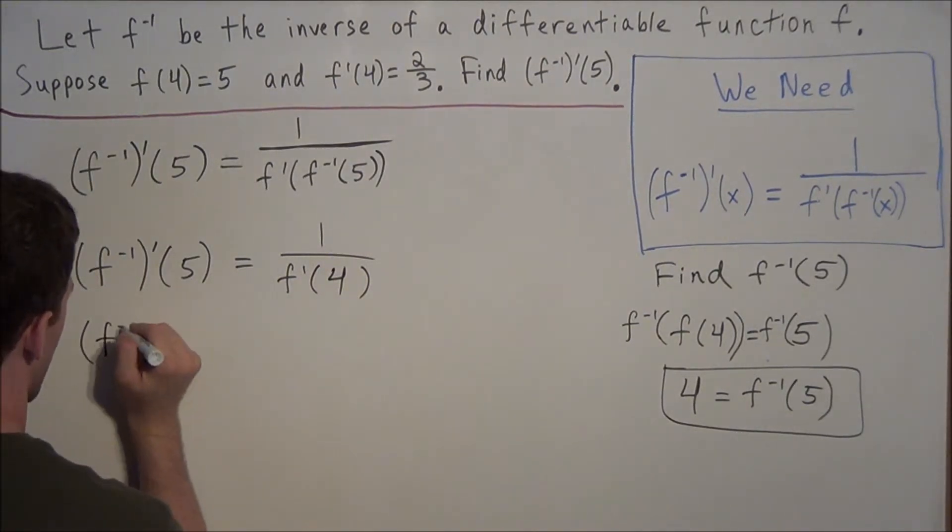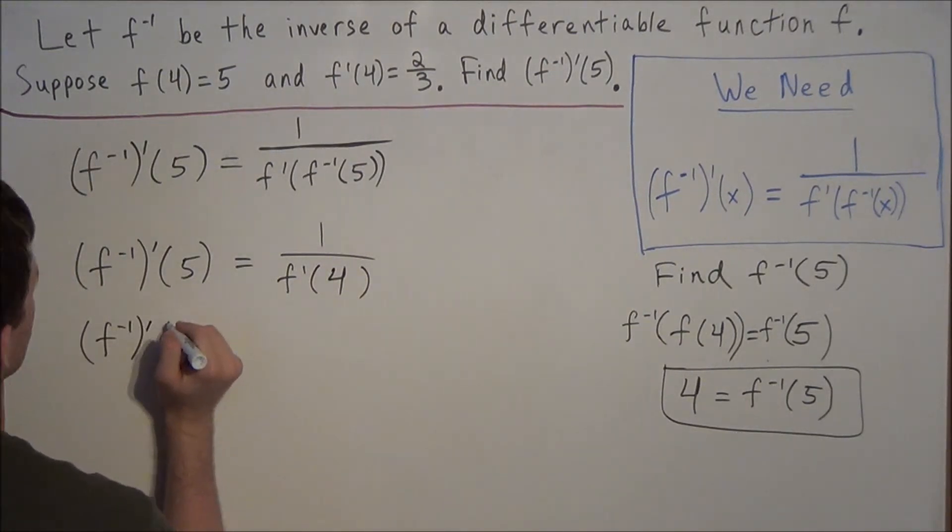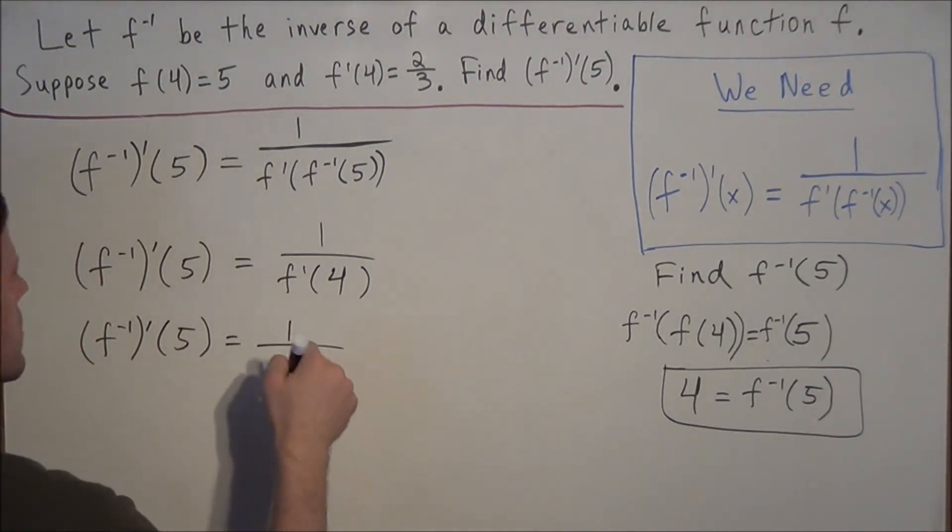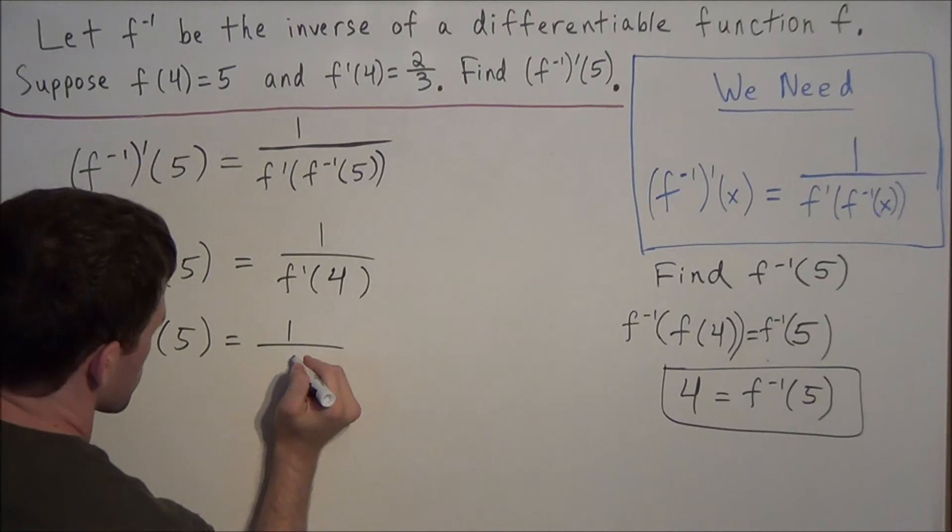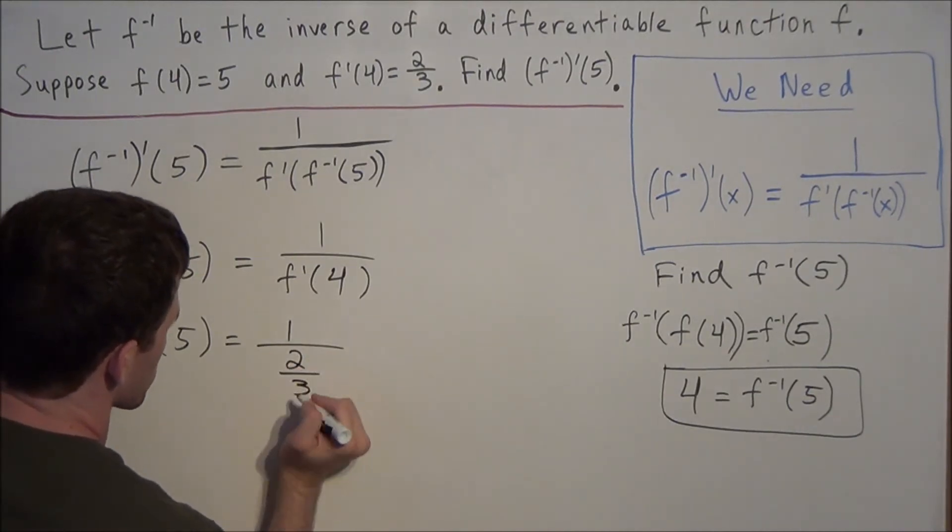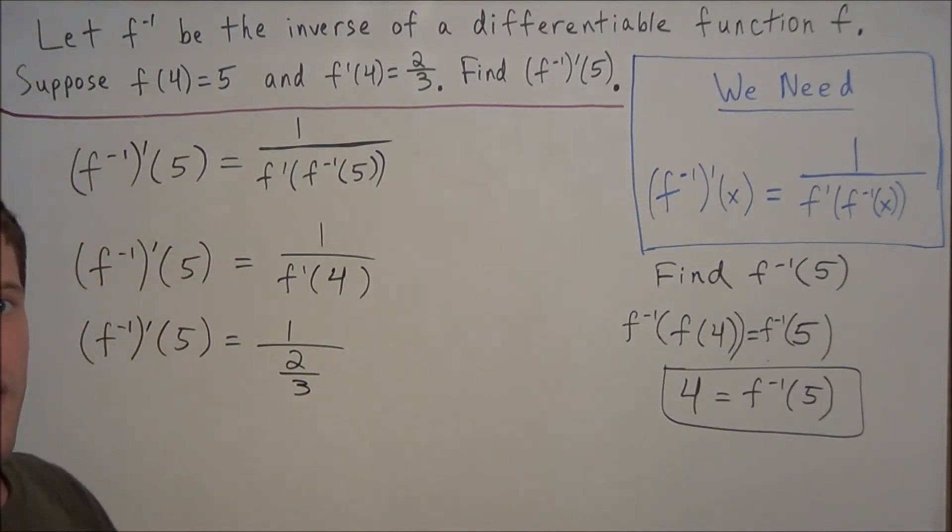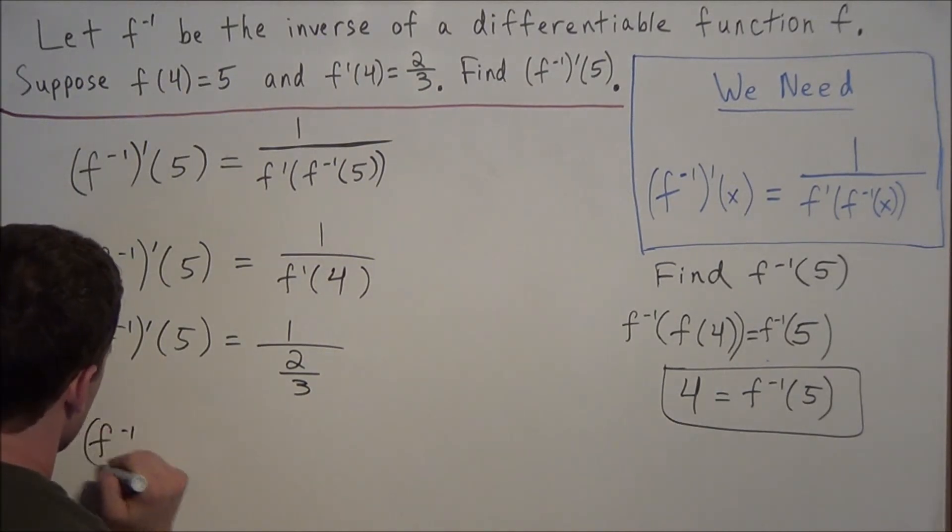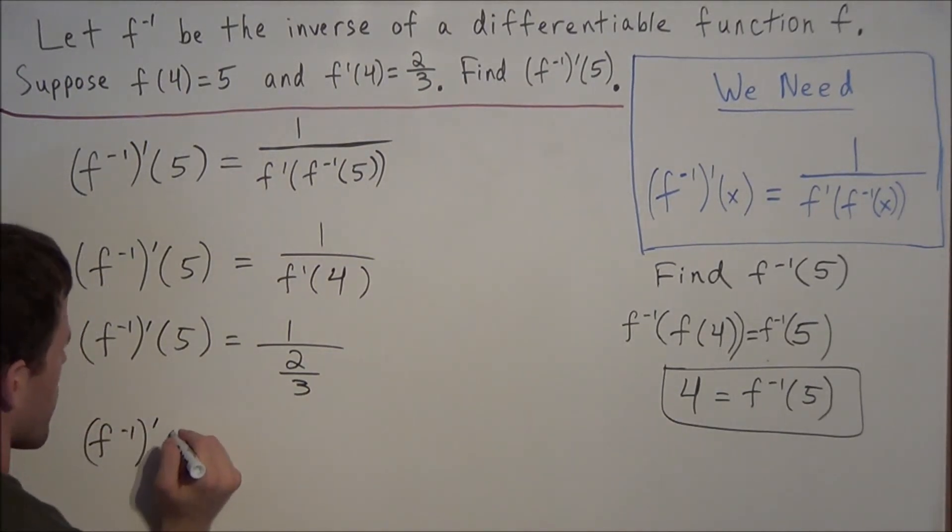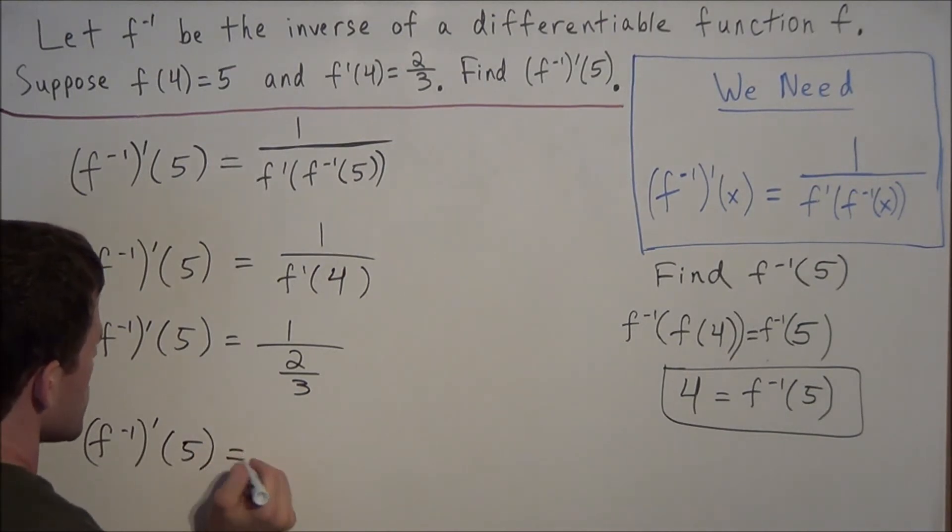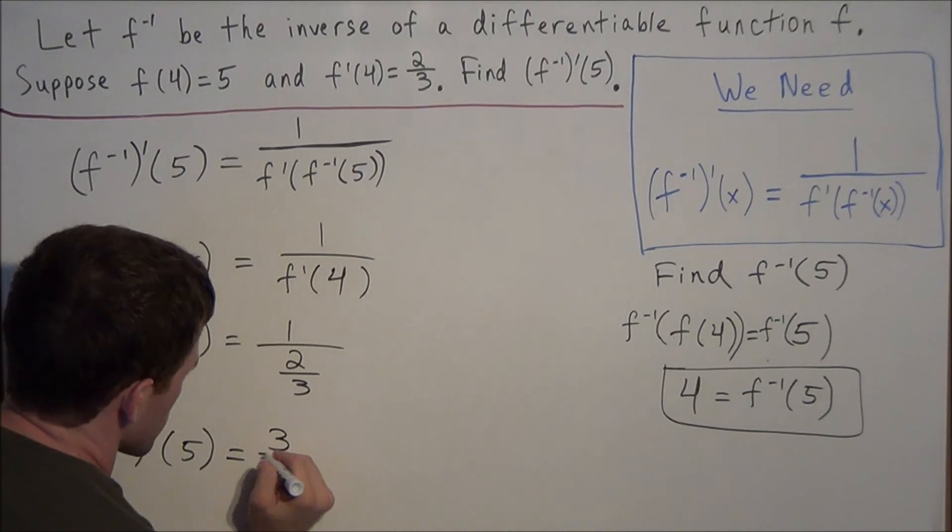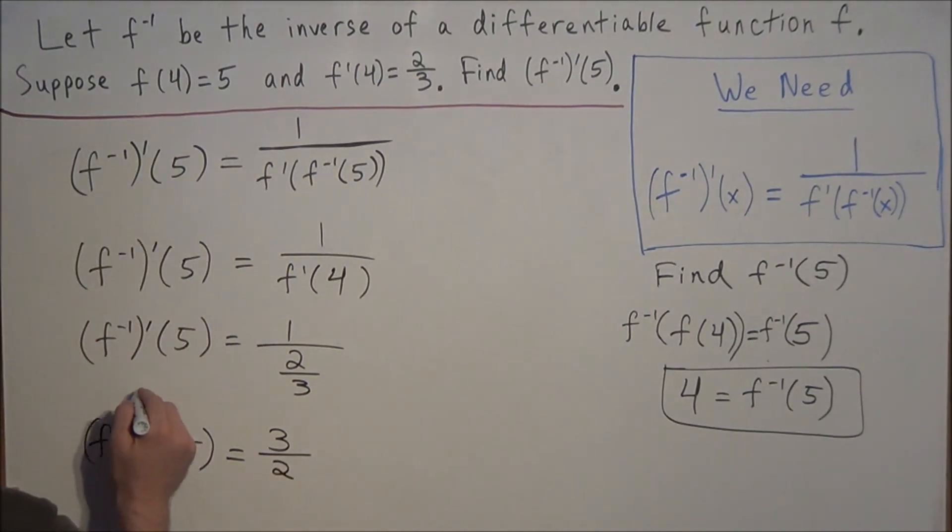So we have the derivative of f inverse of 5 equals 1 over, and now f prime of 4 equals 2 thirds, so we can make a direct substitution. Now we have enough to write our final answer. The derivative of the inverse of f at 5 is equal to 1 divided by 2 thirds, which equals 3 over 2. This is our final answer.